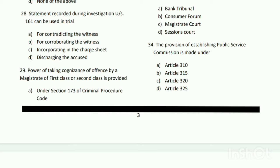Question number twenty-eight: a statement recorded during investigation under Section 161 can be used in trial how? The answer is A - for contradicting the witness. Question number twenty-nine: the power of taking cognizance of an offense by a magistrate of first or second class is provided where?